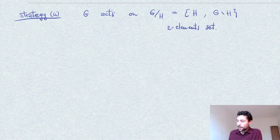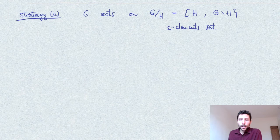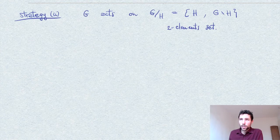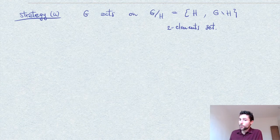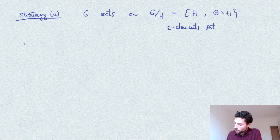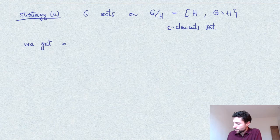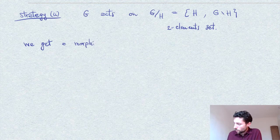We have an action on the set G over H, the two-element set which consists of H and its complement. The action is of course multiplication with elements of G, and thinking of H as a coset, say for example a left coset.